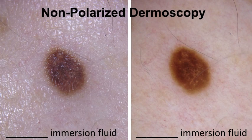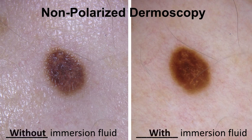Here we have a lesion seen with non-polarized dermoscopy, and now you can tell the difference. In the image on the left, we are seeing basically a clinical image with glare, with light that is being reflected, because it does not have the liquid interface. In contrast, the image on the right has a liquid interface, and therefore we are able to observe the dermoscopic structures, like a subtle negative network in this case.